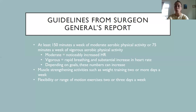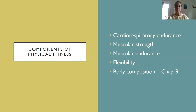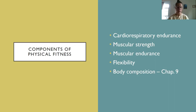Muscle strengthening activities like weight training should be done two or more days a week, and flexibility or range of motion exercises should also be done two or three days a week. There are five components of physical fitness: cardiorespiratory endurance, muscular strength, muscular endurance, flexibility, and body composition. Body composition will be covered in more detail in chapter nine, but remember all five because you will see them again, especially if you pursue a career in athletic training, personal training, or physical therapy.